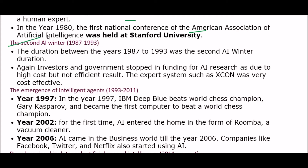The next phase is the second artificial intelligence winter, from 1987 to 1993. Again, investors and government stopped funding for AI research due to high cost but inefficient results. Expert systems such as XCON were very cost-intensive during the second AI winter.